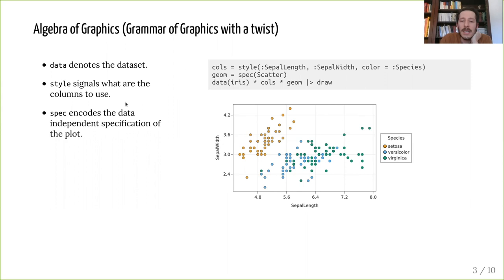And then with style, you would signal what are the columns that you're going to use. So in this example plot, I'm calling style with sepal length, which will be our x-coordinate, and sepal width, which will be on the y-axis. And we will color this plot by another variable called species.